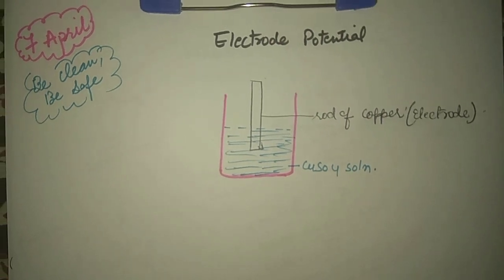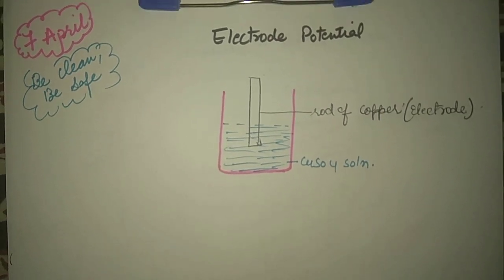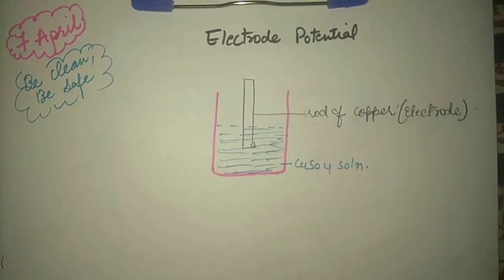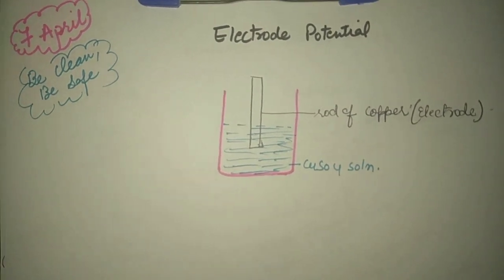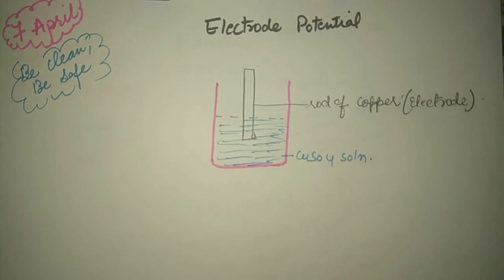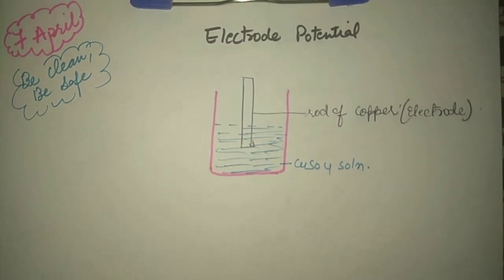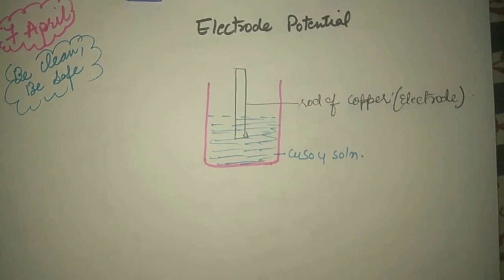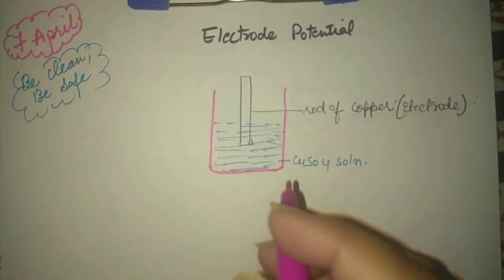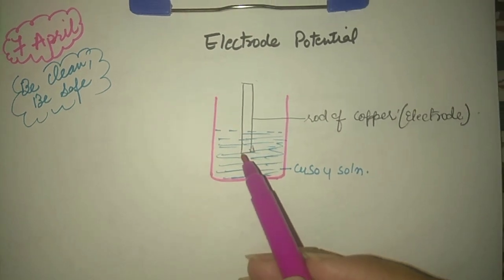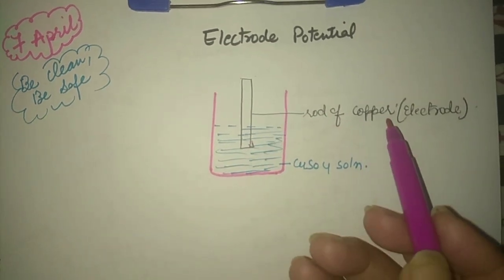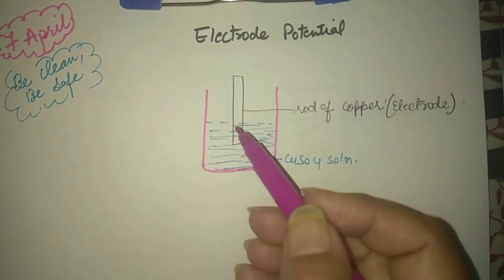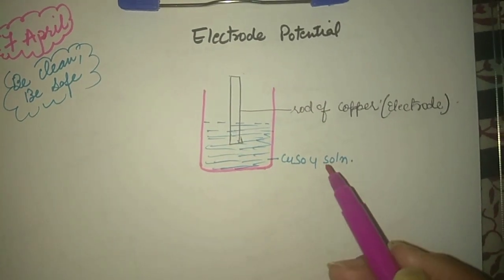Good evening students. Today we will start with the topic electrode potential. As we have seen in the previous video, an electrode has either a positive or negative charge. Now we will study how these negative or positive charges occur on an electrode. For that we have taken an example. Let us take a rod of copper — that is the electrode — and we have put this copper rod in copper sulfate solution.